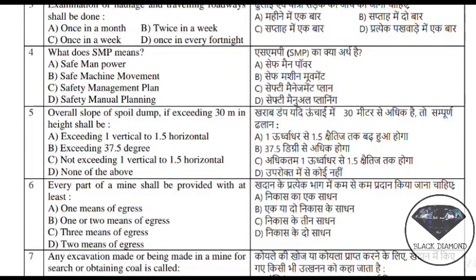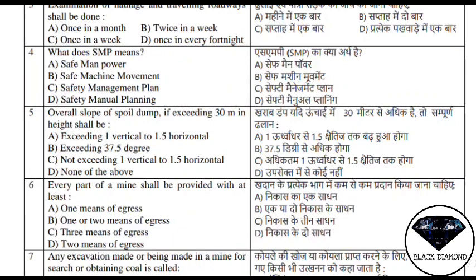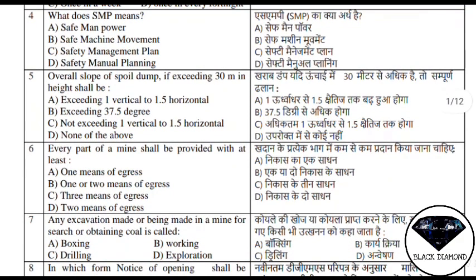Starting with question number 5, which caused confusion. The question is about the overall gradient or overall slope — what would happen if the overburden dump height is 30 meters? To keep the height at 30 meters, it should not be more than 30 degrees. When it comes to 30 degrees, it will become a dump with 1 vertical to 1.5 horizontal slope, and it will not be more than 5 degrees — so the answer is 5.